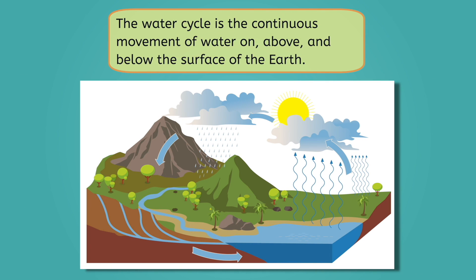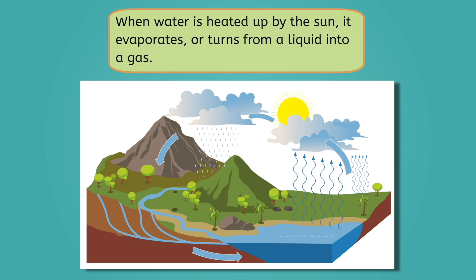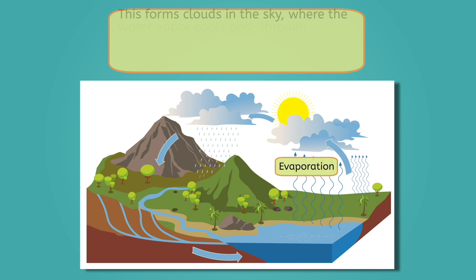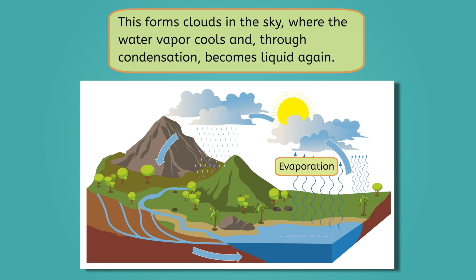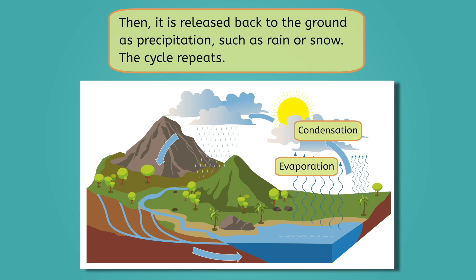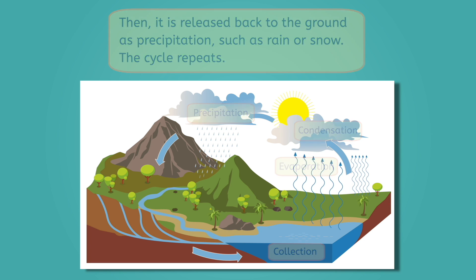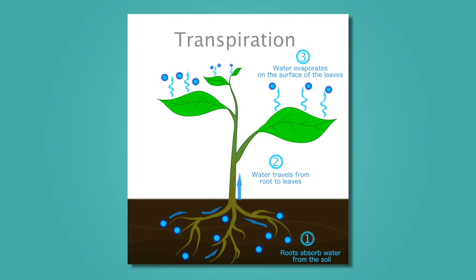Water is delivered and regulated via the water cycle, which is the continuous movement of water on, above, and below the surface of the Earth. When water is heated up by the sun, it evaporates, or turns from a liquid into a gas. This forms clouds in the sky, where the water vapor cools and, through condensation, becomes liquid again. From here, it is released back to the ground as precipitation, such as rain or snow, where it collects and the cycle repeats. Living things are also a part of the water cycle — plants absorb water and release it back into the atmosphere in a process called transpiration.